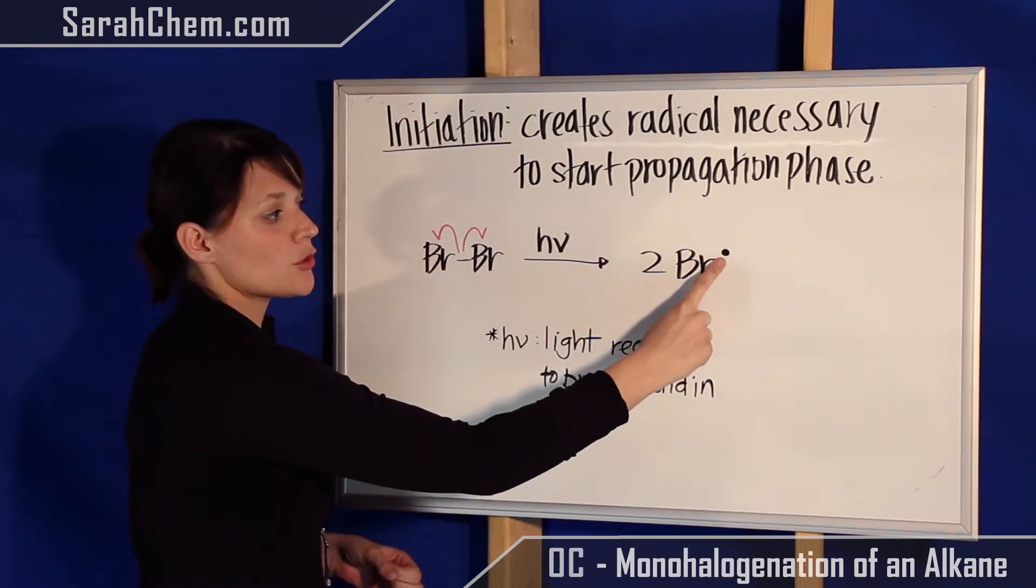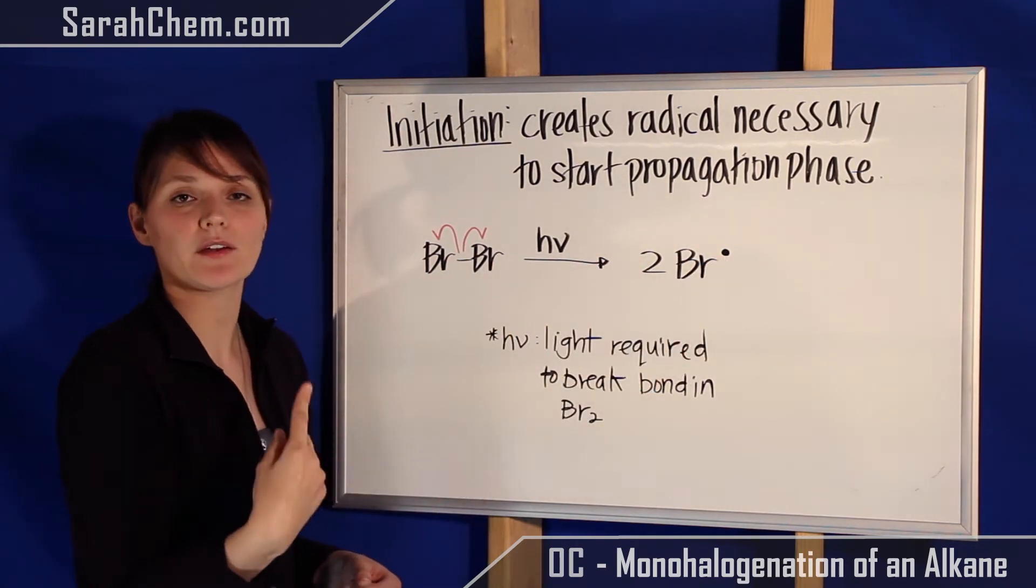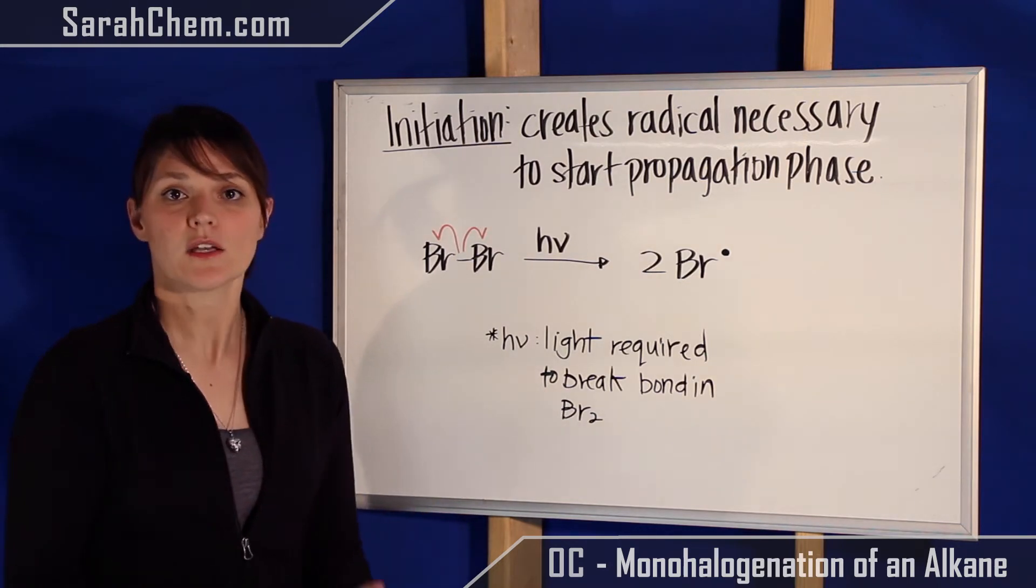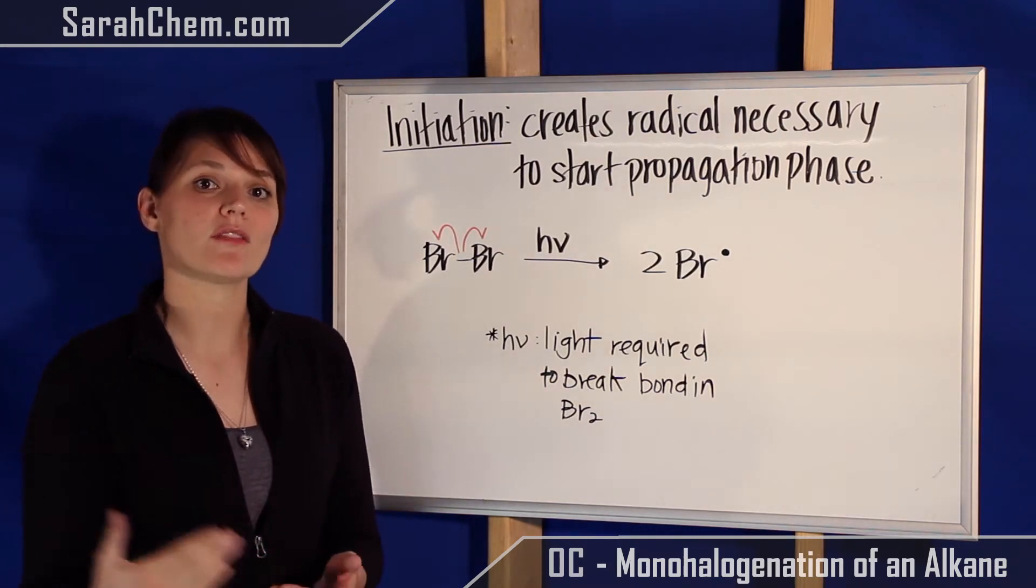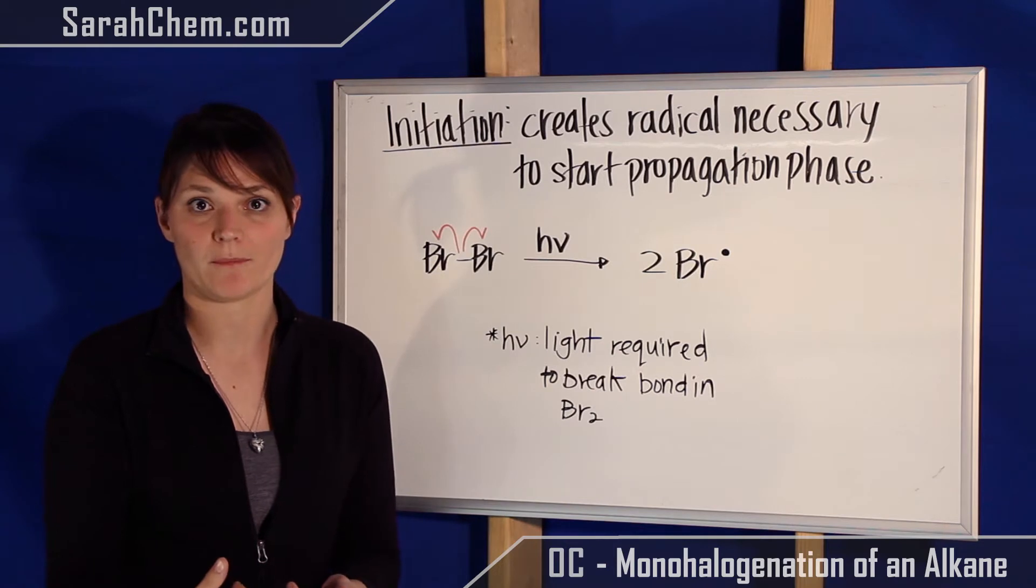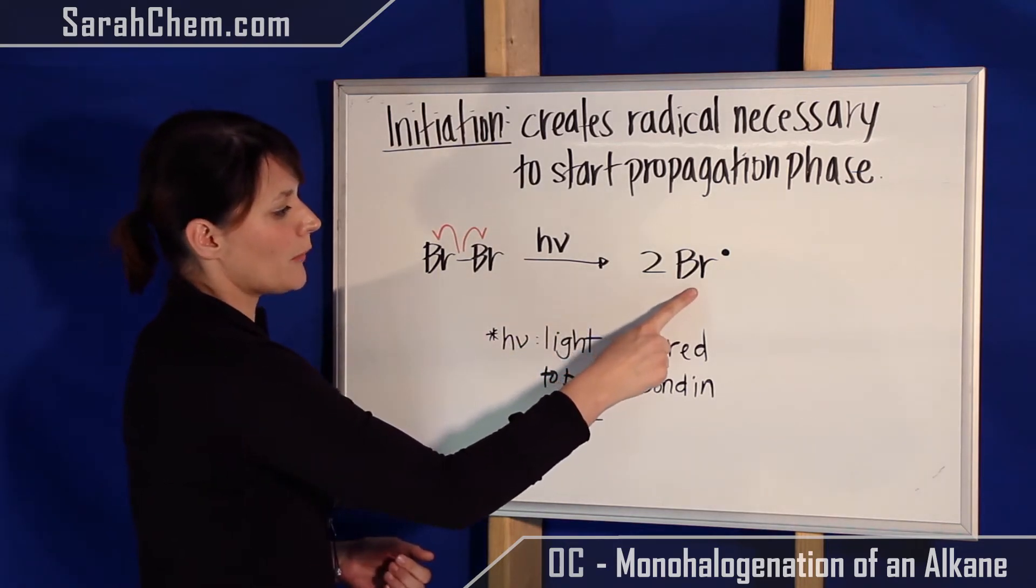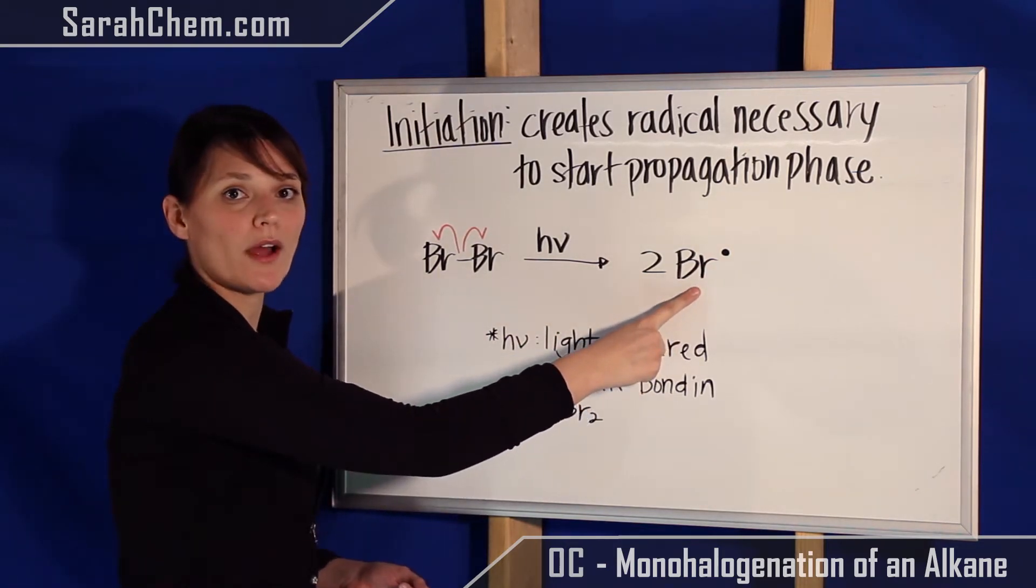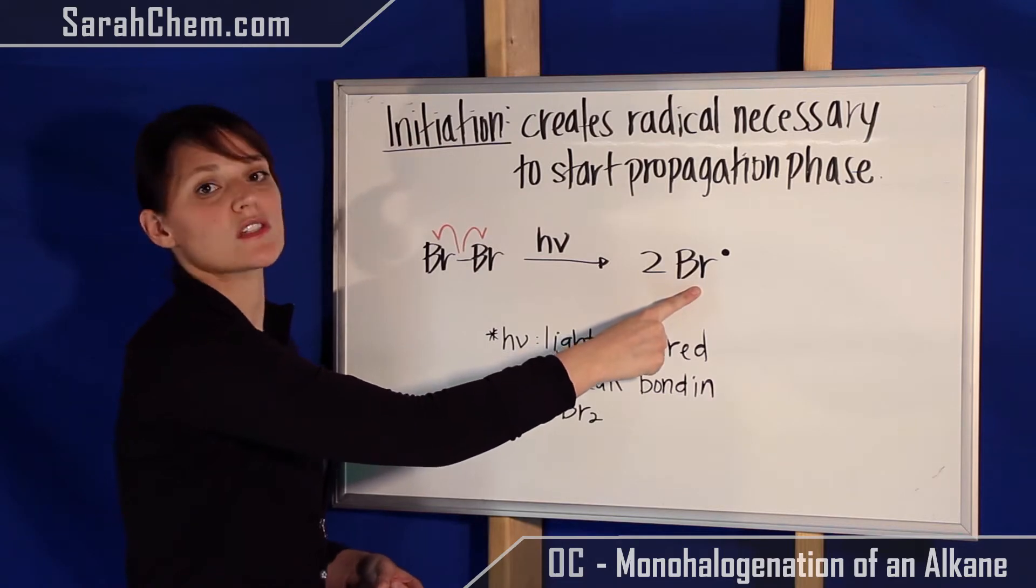So over here, we'll have two bromines that has one unpaired electron sitting on it. And that's what a radical is. A radical is where you have an electron that does not have its partner with it. So here we create our two bromine radicals, and these bromine radicals will be used in the next phase, which is the propagation phase.